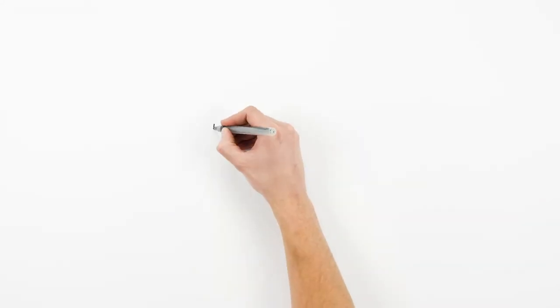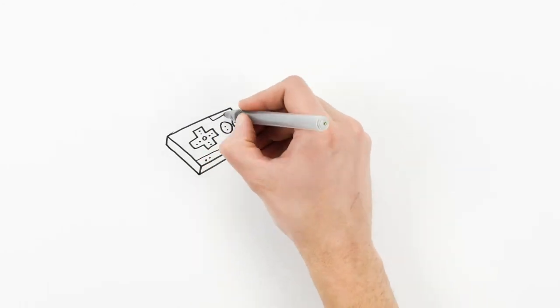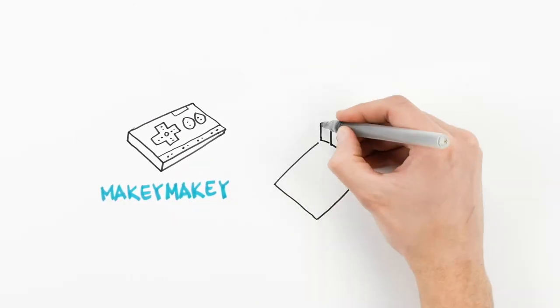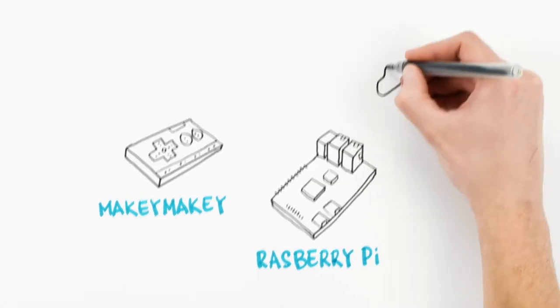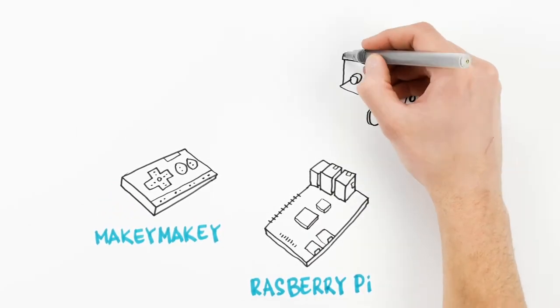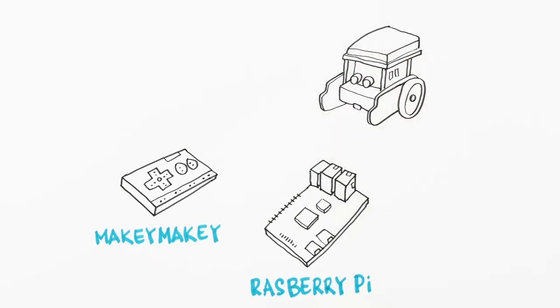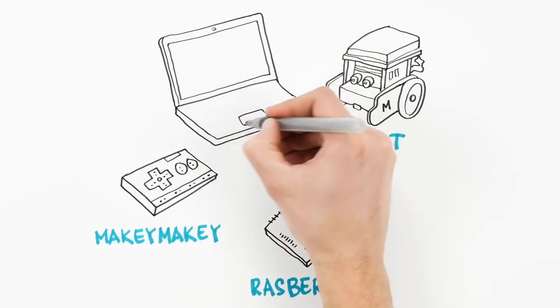If young people want to build basic electronics, Makey Makey or Raspberry Pi can be a good choice. Programming becomes a lot more engaging for most young people when they can see the results of writing code.